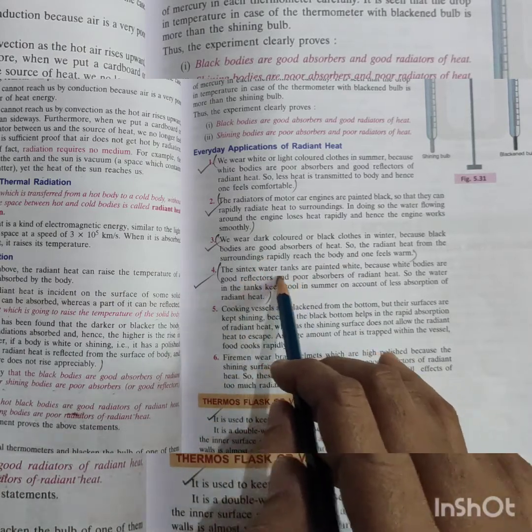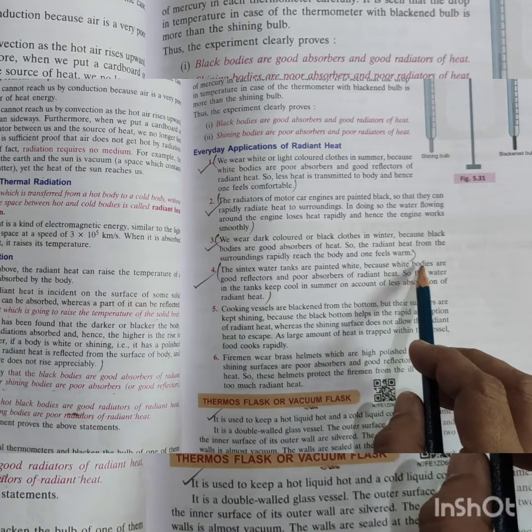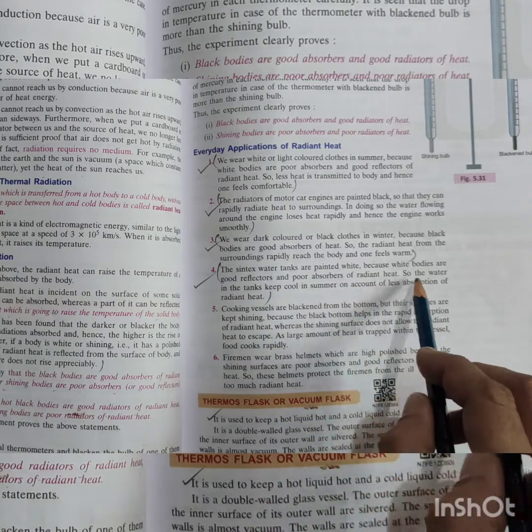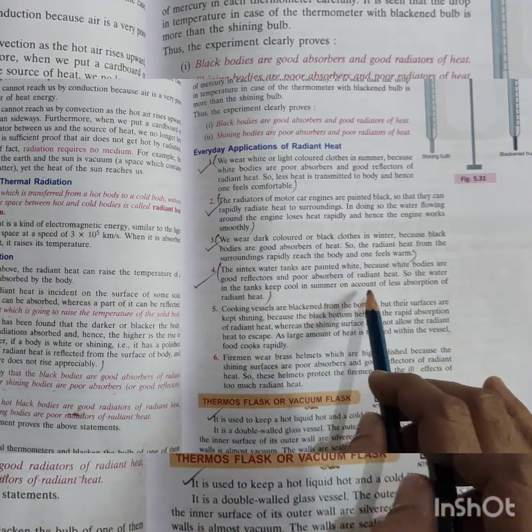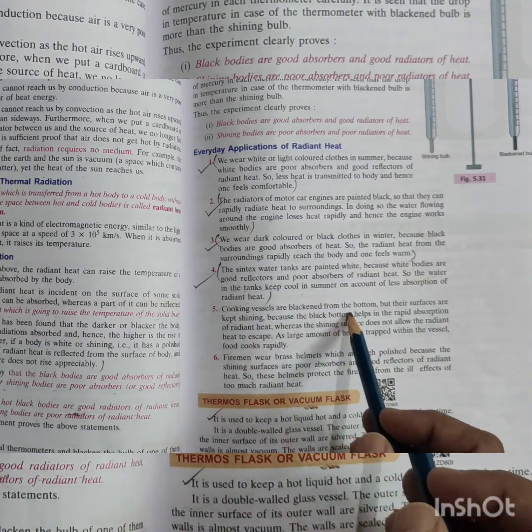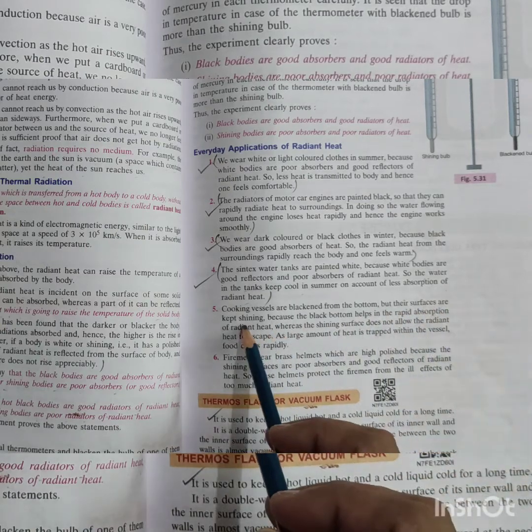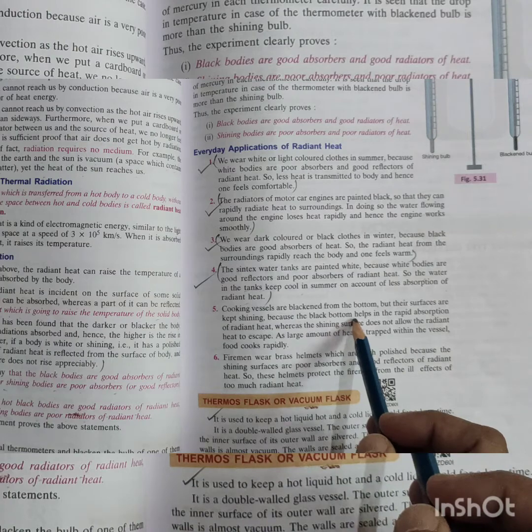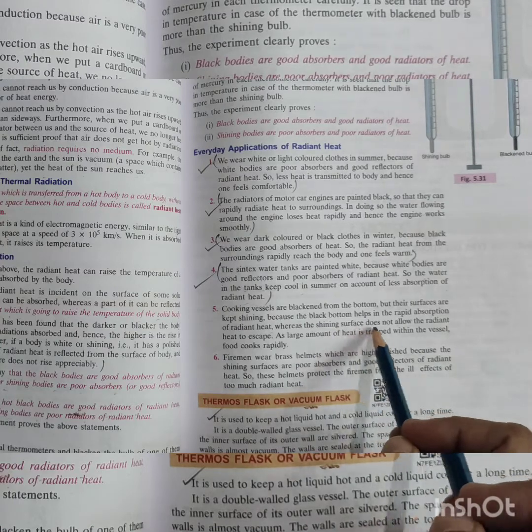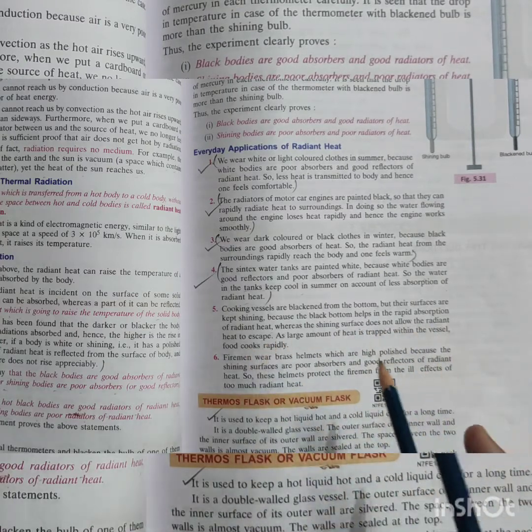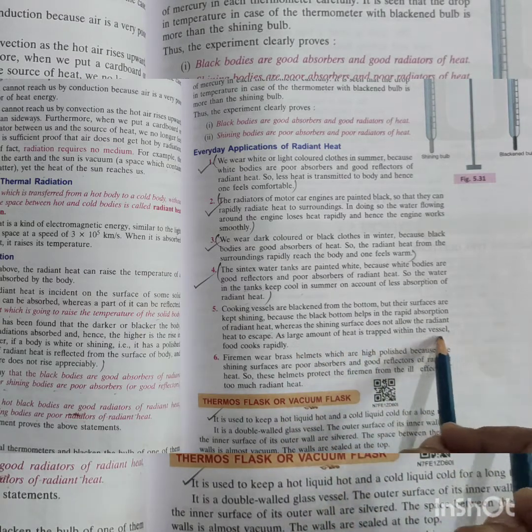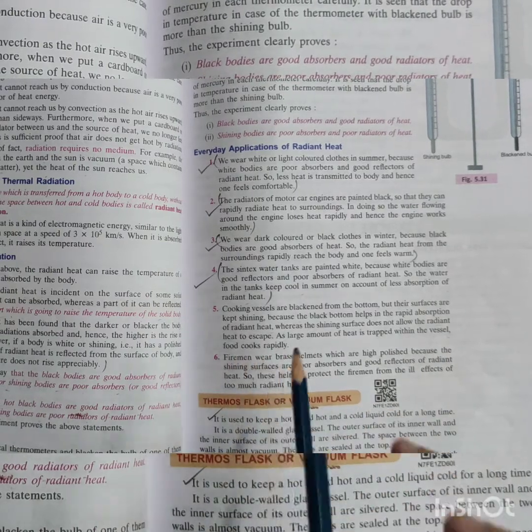Then, the syntax tank, water tanks are painted white. Because white bodies are good reflectors and poor absorbers of radiant heat, the water in tank keeps cool in summer on account of less absorption of radiant heat. Cooking vessels are blackened from the bottom, but their surfaces are kept shining. Because black bottom helps in the rapid absorption of radiant heat, whereas the shining surface does not allow the radiant heat to escape. As large amounts of heat are trapped within the vessel, it makes food cook rapidly.